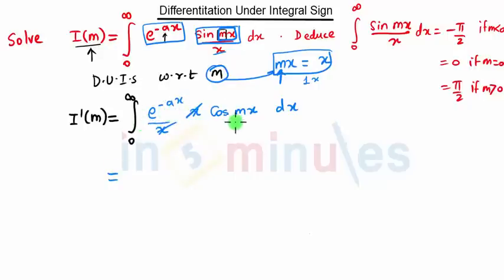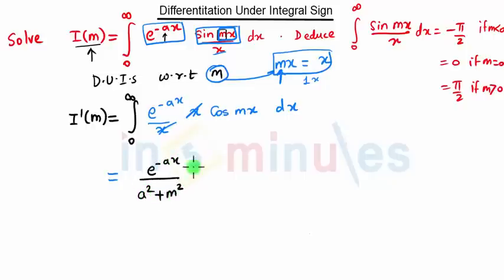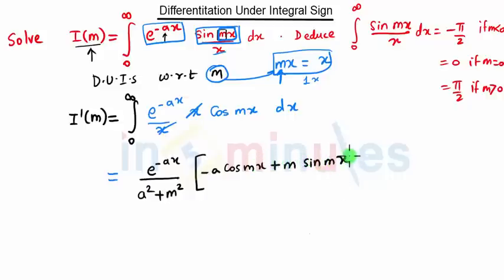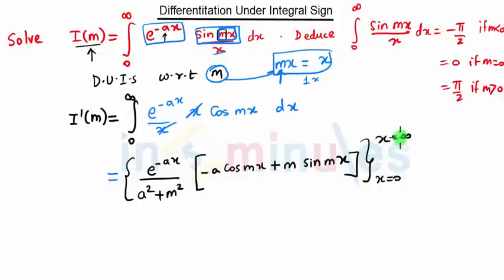Here we are going to use the direct formula: the integral of e^(-ax) cos(mx) dx equals e^(-ax) / (a² + m²) times (-a·cos(mx) + m·sin(mx)). This is the direct formula we have, and then we apply the lower limit and upper limit of x.